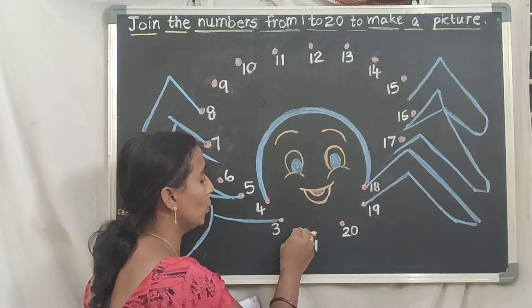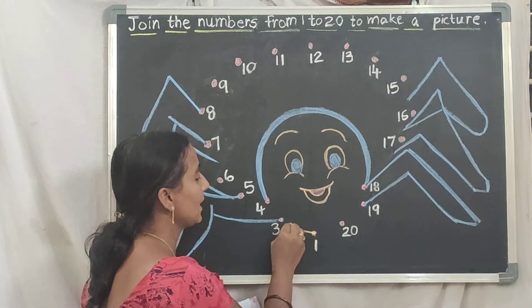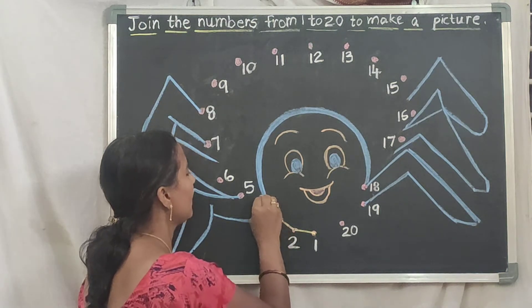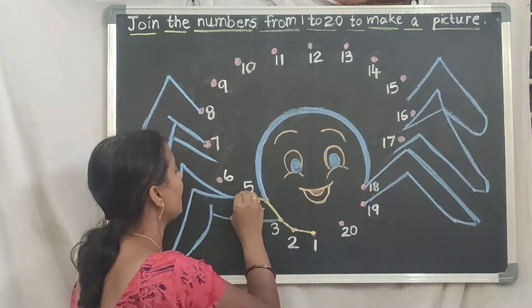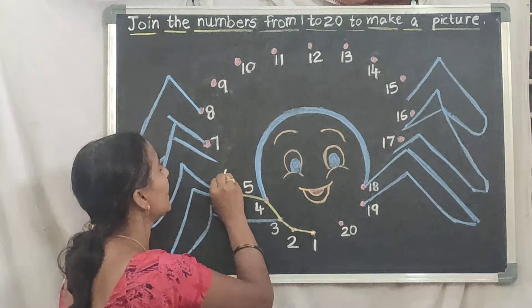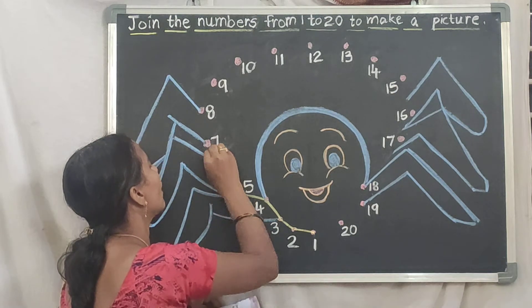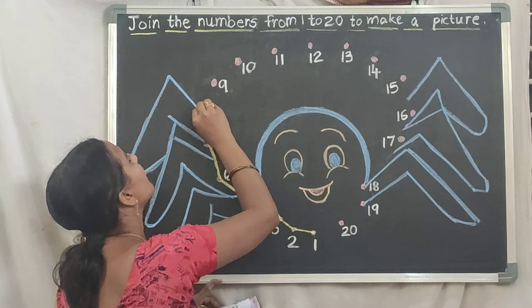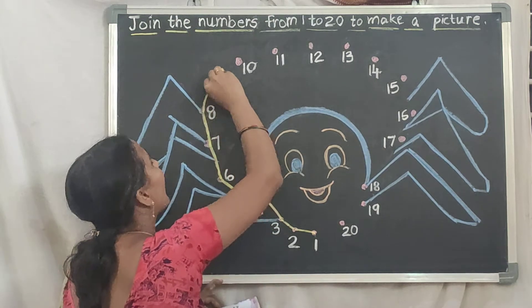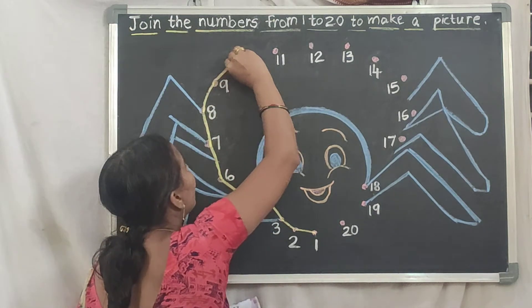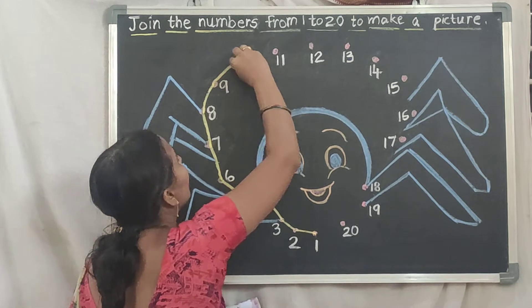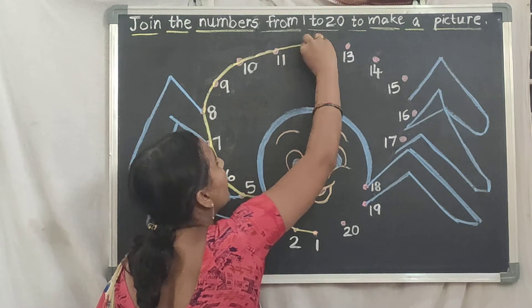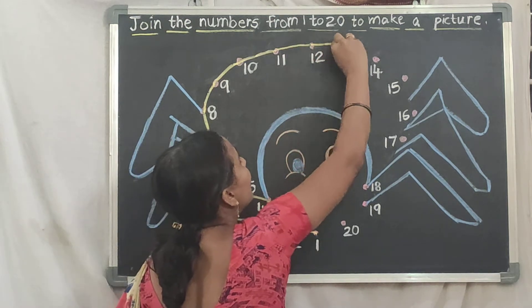From 1 go up to 2. Two after three dot, three after four dot, four after five dot, five after six dot, six after seven dot, seven after eight dot, eight after nine dot, nine after ten dot. Ten after eleven dot.